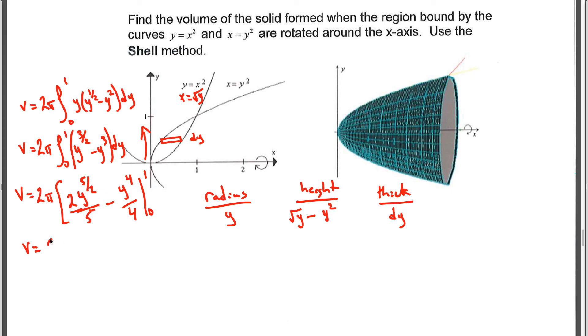And similar to the area question, we'll plug in the 1. And that will give us 2/5 minus 1/4. And then we're going to subtract, plug in 0, but that's 0, so we don't even need to worry about that. And if we multiply that all together, we get the final answer, which is 3π/10 units cubed, because now we're talking about volume.